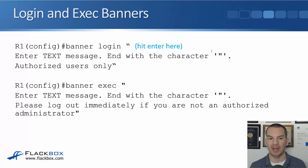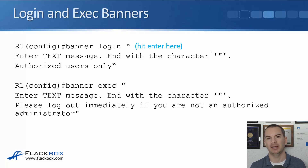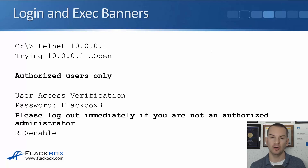For the exec banner, you say 'banner exec' — so before it was 'banner login', now we do 'banner exec'. Our delimiter again — in the example, we're using double quotes. The router will tell us to enter the text message after we hit enter. In our example, we're saying 'please log out immediately if you're not an authorized administrator.' Then hit the double quotes again and it'll break us back out of the command. When an administrator goes to Telnet into the router or the switch, before it prompts them for their password, it gives them the login banner — 'authorized users only' for our example. Then it will prompt them for a password. They enter their password, and then as soon as they've logged in, they'll get the exec banner.